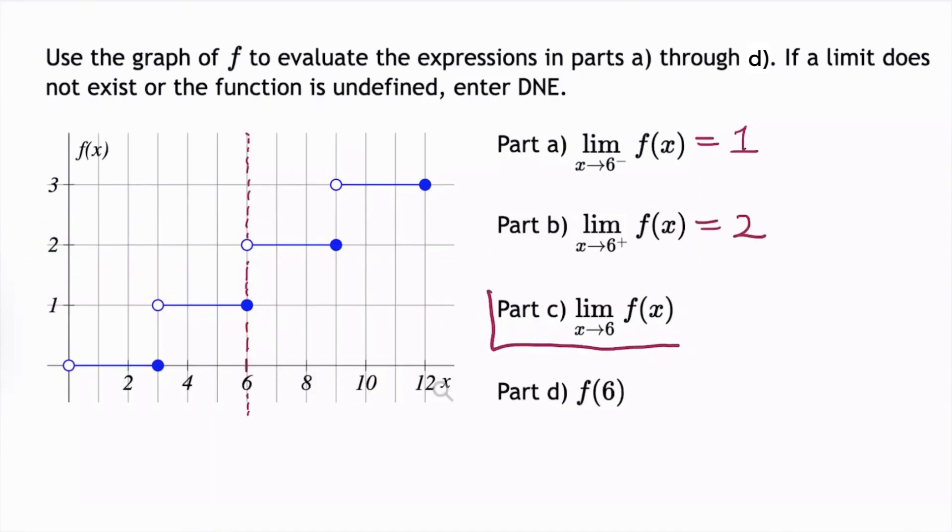In part c, we need to find the two-sided limit as x approaches 6 of f(x). So we need to look at each of the one-sided limits. And since the one-sided limits are not equal to each other, the two-sided limit does not exist.